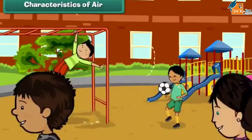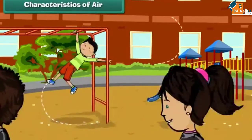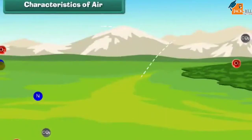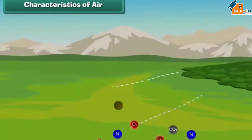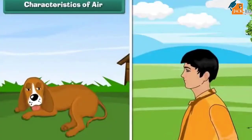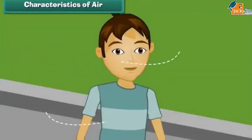Characteristics of air: We are surrounded by air. Air is a mixture of gases and other particles. It is essential for the survival of living things. All living things breathe in and breathe out air. Air has no taste, colour, or odour. We cannot see it, but we can feel it.